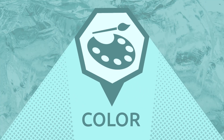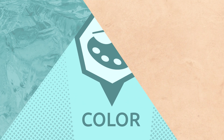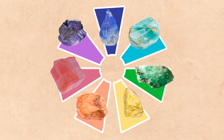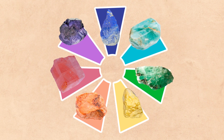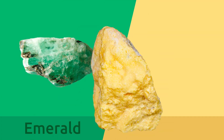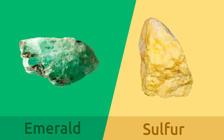Color: each mineral has a distinct color. Emeralds, for example, are green, while sulfur is yellow.